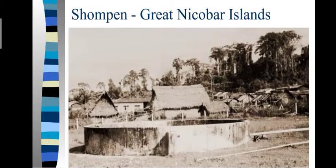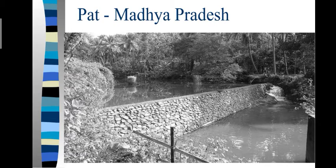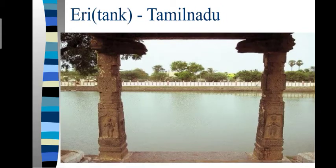Other traditional water conservation systems include: Shopman, used in Great Nicobar Island to store water for daily use; Ram Tech Model, used in Maharashtra by tribes to conserve water for daily use; Patts, used in Madhya Pradesh to conserve water for daily needs; and Eri, meaning tank in Tamil, used in Tamil Nadu for conservation of water and for cultivating crops.